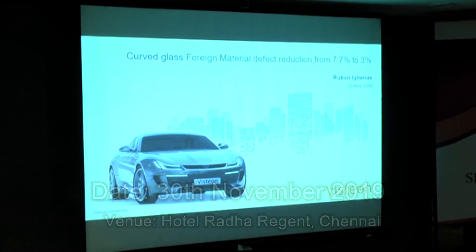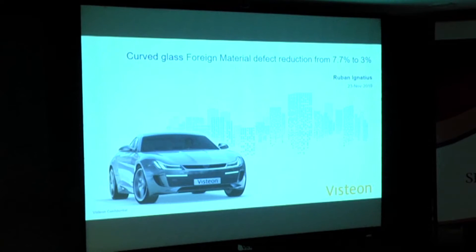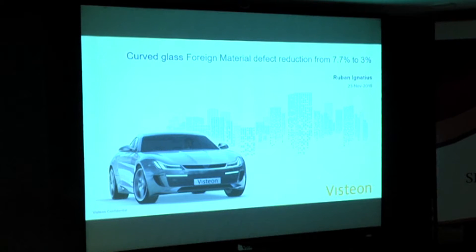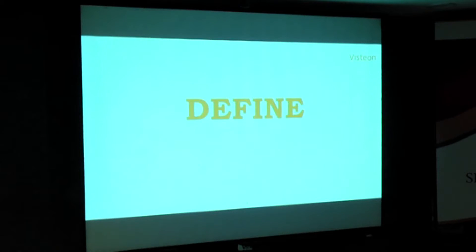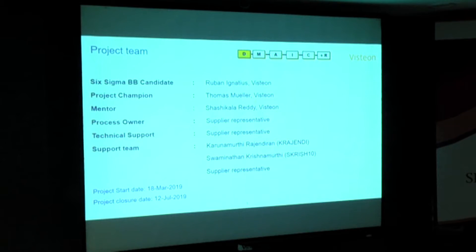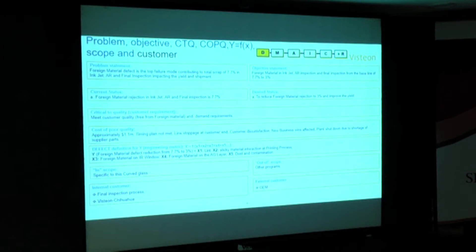This is my project title: Curved Glass Foreign Material Defect Reduction from 7.7% to 3%. This project we did at a supplier end. For confidentiality reasons I'm not revealing the supplier name and the program name, but this is done for our prestigious customer BMW. I am the Black Belt candidate and these are my team members. My support team internally is Swaminathan and Karnavamurthy, and supplier representatives were also helping us in doing this project.